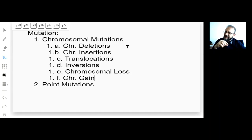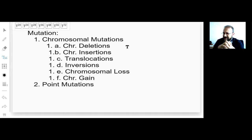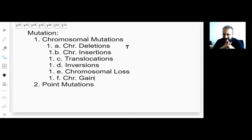Translocation means a piece from one chromosome moves to another position in another chromosome — for example, a piece from chromosome 3 moves into chromosome 14. Inversion means one piece on a chromosome is reversed. Chromosomal loss means instead of two copies, one chromosome has only one copy. Chromosomal gain means one chromosome has three copies.